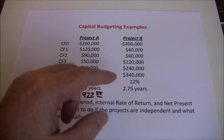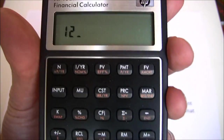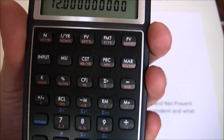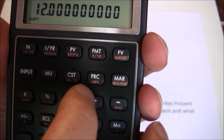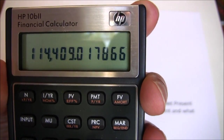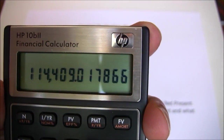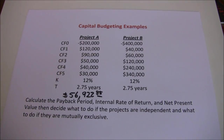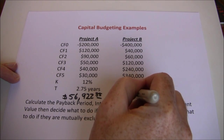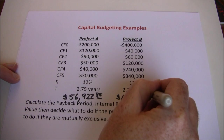Now we have to go to that discount rate: 12%, so enter 12, I/YR. Shift, NPV. And we get a net present value of $114,409.02. Go ahead and write that down: $114,409.02.